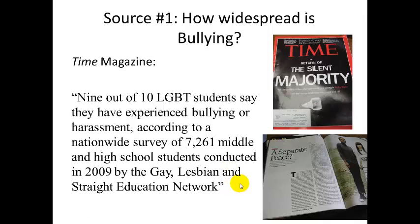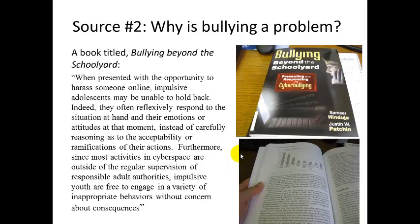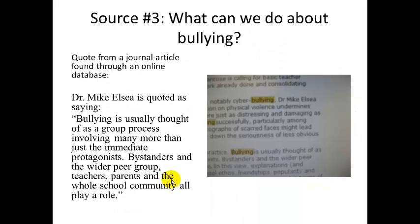Source number two is a quotation that specifically addresses the question of why bullying is a problem. I actually found this in a book called Bullying Beyond the Schoolyard: Preventing and Responding to Cyber Bullying. It's a long quotation that talks about how when presented with the opportunity to harass someone online, impulsive adolescents may be unable to hold back, and how online bullying can lead to all sorts of negative behaviors. That's my second source. And then finally, my third source — what can we do about bullying? For this research question, I was able to find a quotation from a journal article on an online database.